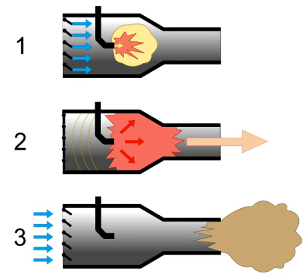The valveless pulsejet operates on the same principle as the valved pulsejet, but the valve is replaced by the engine's geometry. Fuel, as a gas or atomized liquid spray, is either mixed with the air in the intake or directly injected into the combustion chamber. Starting the engine usually requires forced air and an ignition source, such as a spark plug, for the fuel-air mix. With modern manufactured engine designs, almost any design can be made to be self-starting by providing the engine with fuel and an ignition spark. Once running, the engine only requires input of fuel to maintain a self-sustaining combustion cycle.